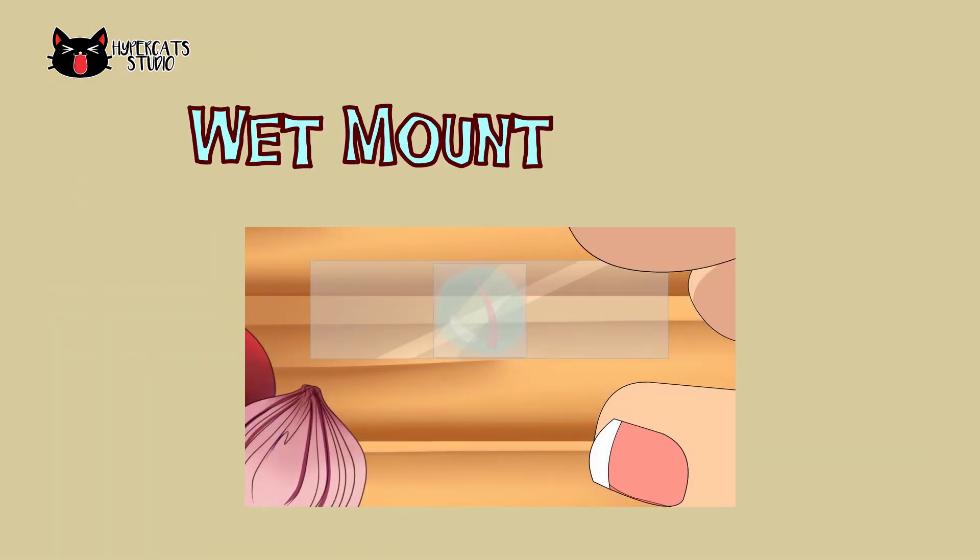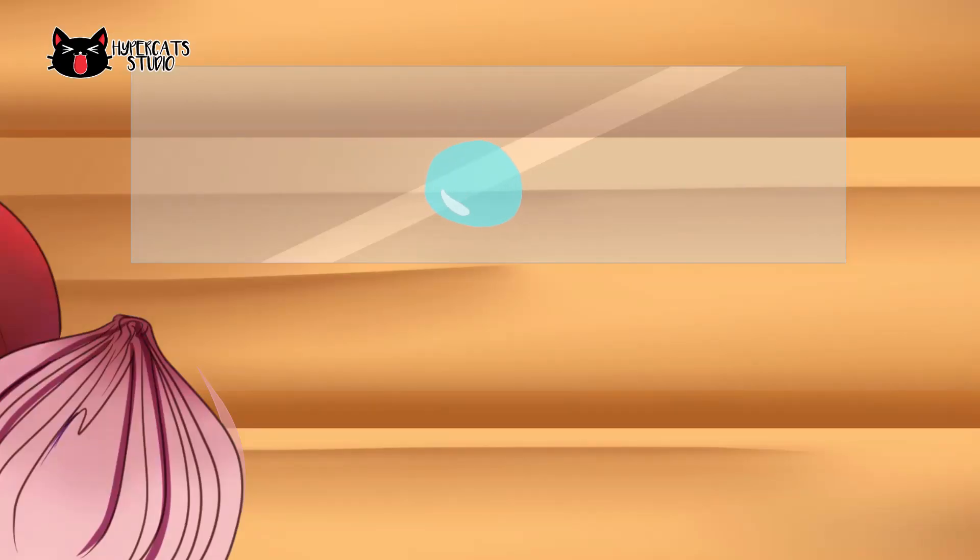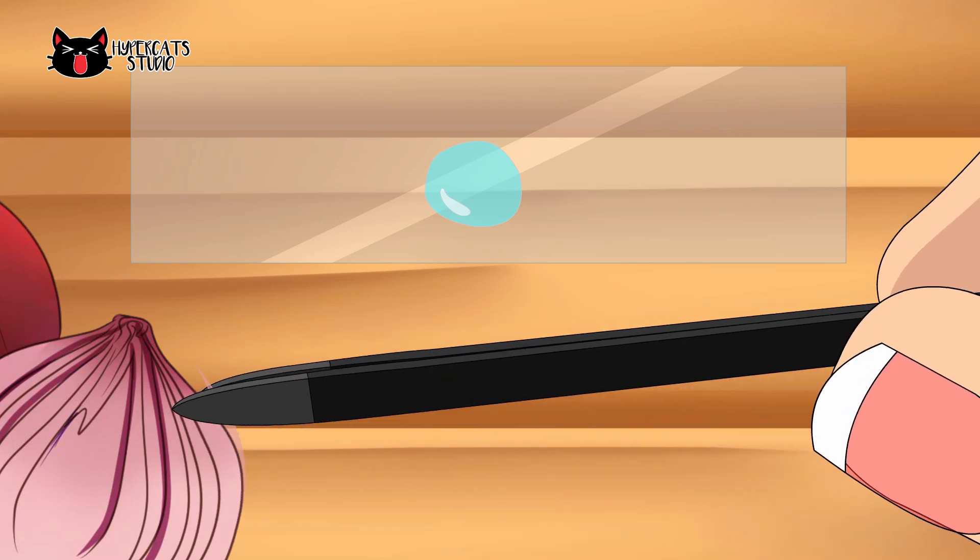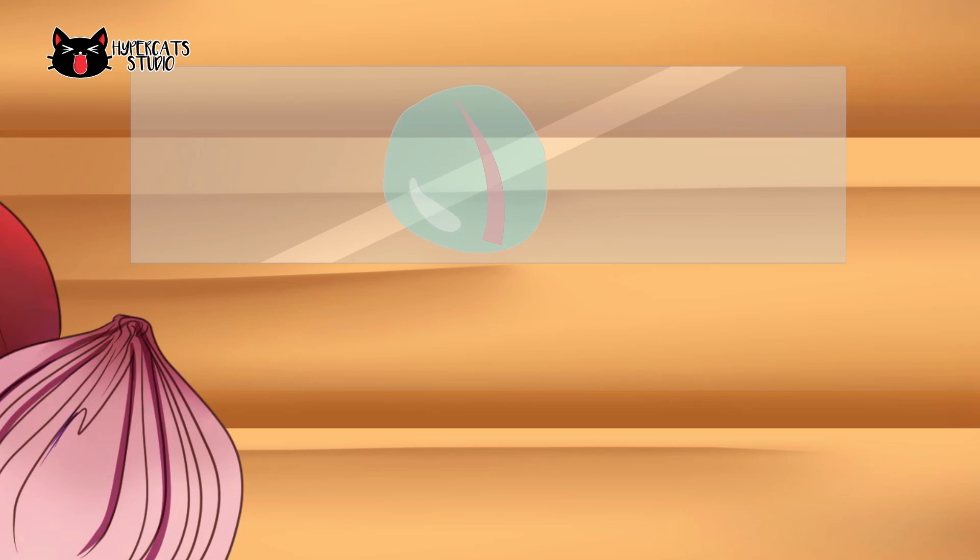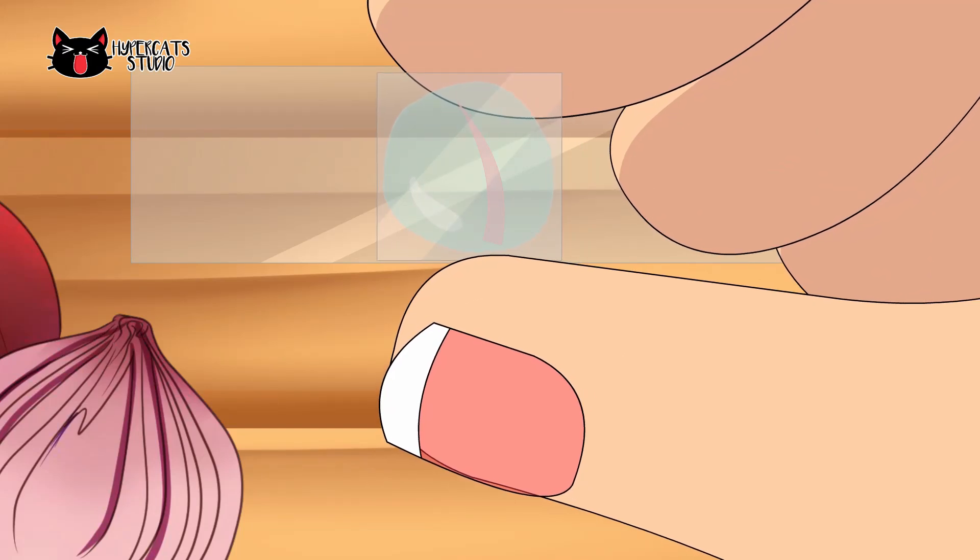The second technique is called wet mount. To prepare the slides, we need to place a drop of fluid in the center of the slide. Put the sample on the liquid using tweezers. At an angle, place one side of the cover slip against the slide making contact with the outer edge of the liquid drop. Lower the cover slowly, avoiding air bubbles, then remove excess water with a paper towel.